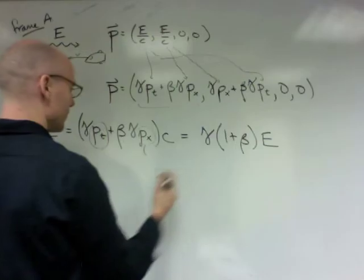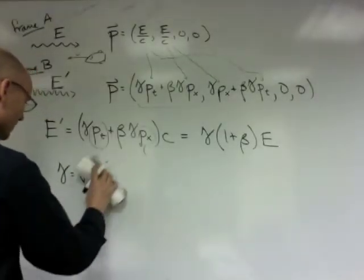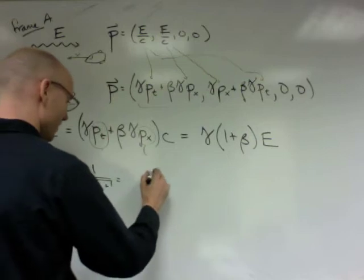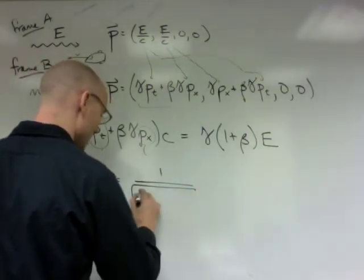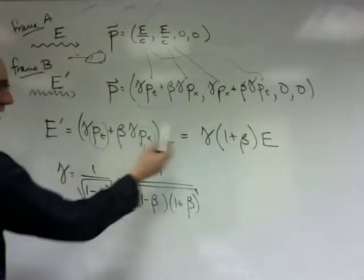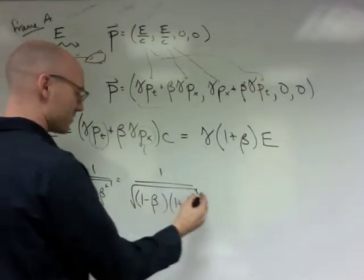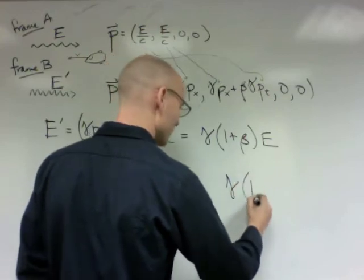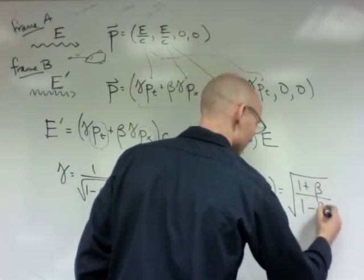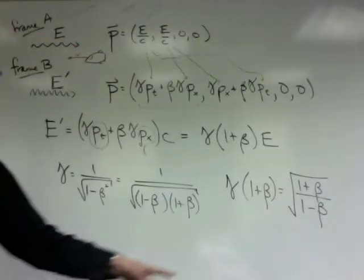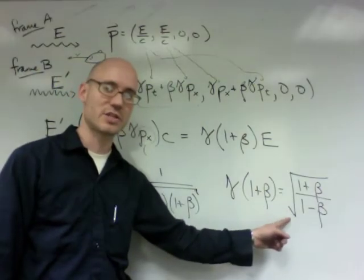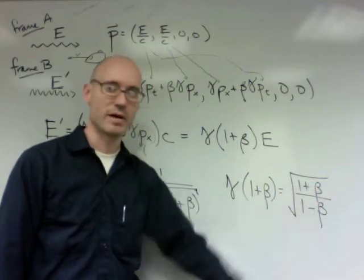But this can be simplified a little bit further. Remember, gamma is 1 over the square root of 1 minus beta squared, which if you really want to go to town, you can write as 1 over the square root of 1 minus beta, 1 plus beta. And so if you multiply gamma times 1 plus beta, you can see you put a 1 plus beta up here, that's going to interact with that. And you get that gamma times 1 plus beta is the square root of 1 plus beta over 1 minus beta. And this is the relativistic expression for the Doppler shift, that the energy in the new frame is related to the energy in the old frame by the square root of 1 plus v over c over 1 minus v over c.